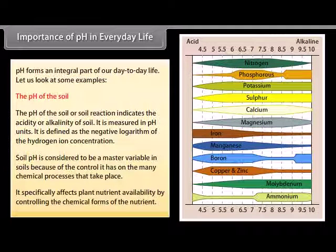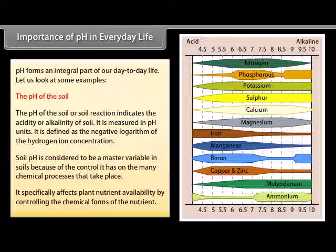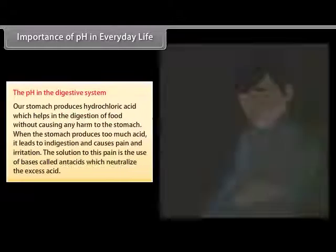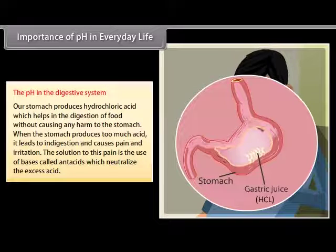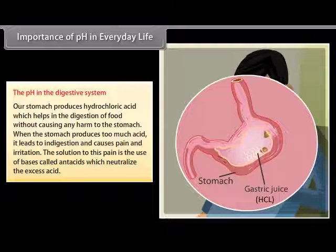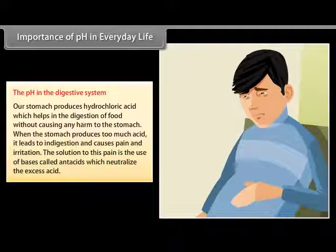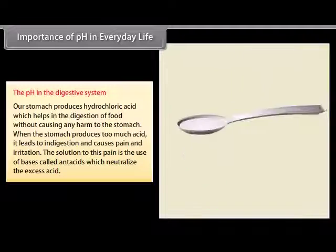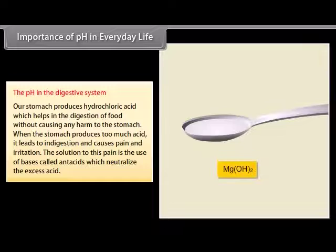Soil pH specifically affects plant nutrients' availability by controlling the chemical forms of the nutrient. The pH in the digestive system: our stomach produces hydrochloric acid which helps in the digestion of food without harming the stomach. When the stomach produces too much acid, it leads to indigestion and causes pain and irritation. The solution is the use of bases called antacids, which neutralize the excess acid.